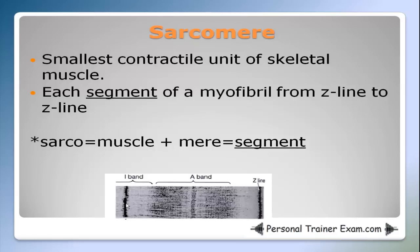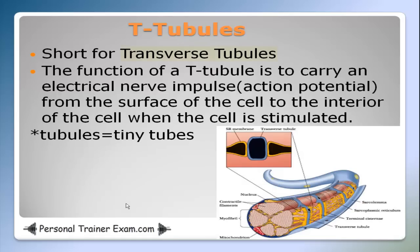T-tubules, short for transverse tubules. The function of a T-tubule is to carry an electrical nerve impulse action potential from the surface of the cell to the interior of the cell when the cell is stimulated. The word tubules means tiny tubes. In this picture, the blue lines going across the muscle fiber — that's the T-tubules.